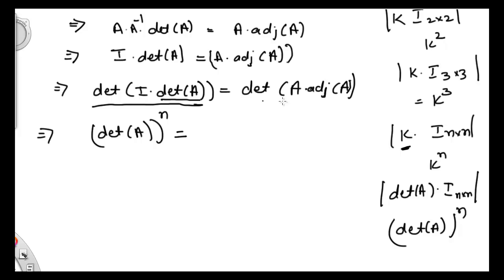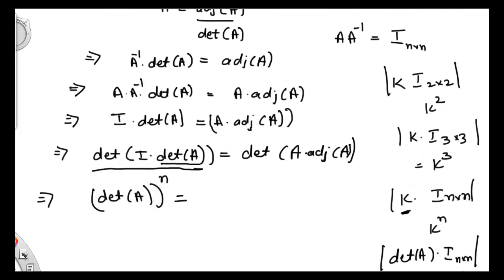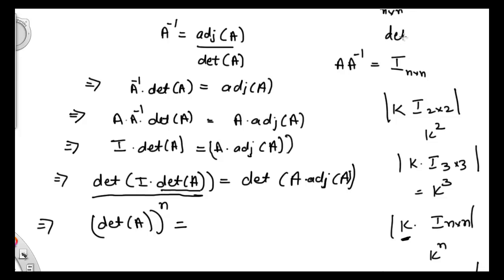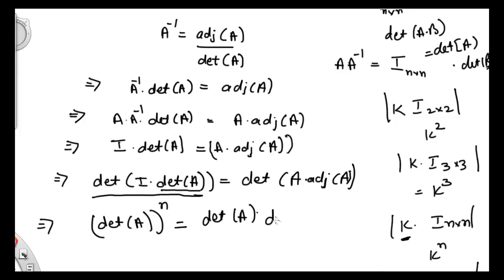And we have another property we need to use on the right hand side, which is that determinant of A dot B is equal to determinant of A dot determinant of B. So I can write here: determinant of A dot determinant of adjoint of A.